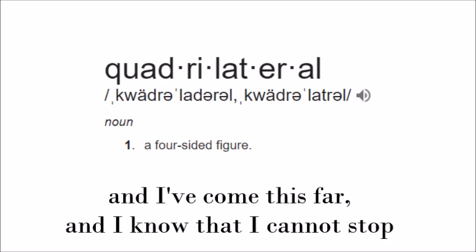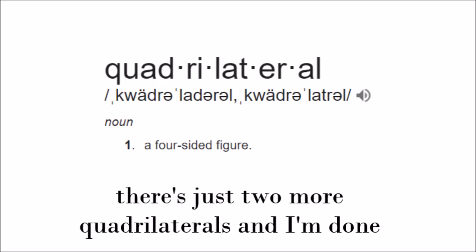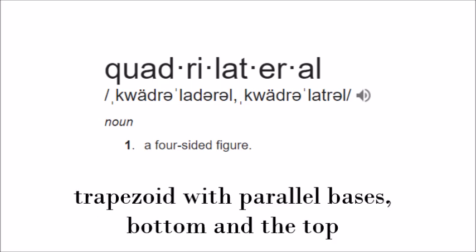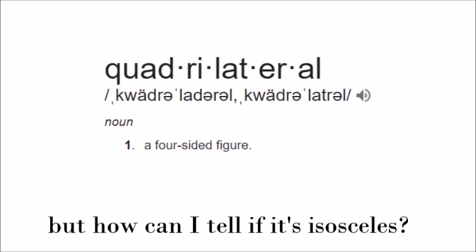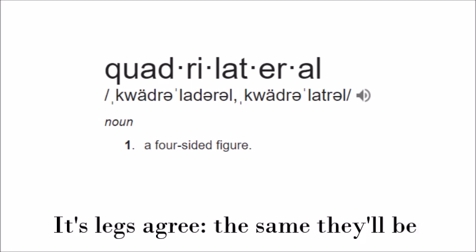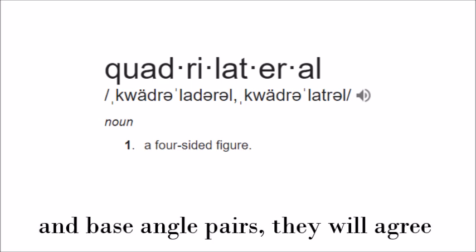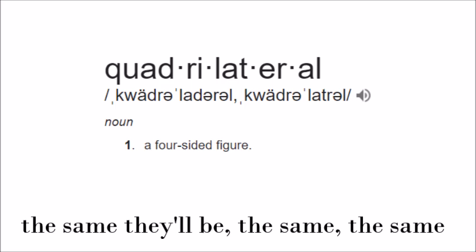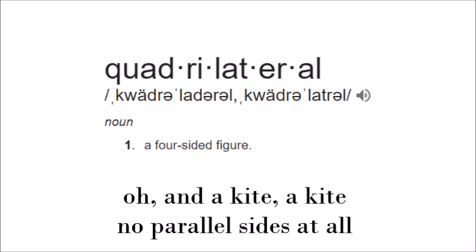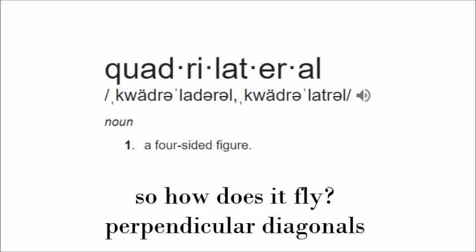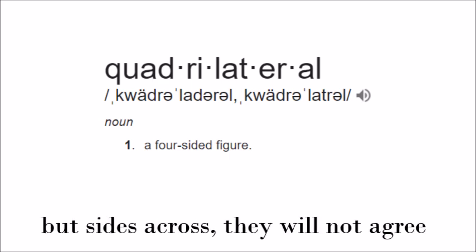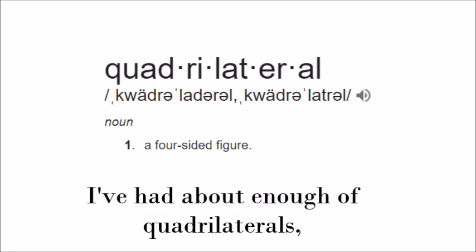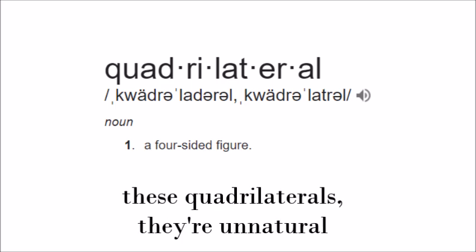And I've gone this far, and I know that I cannot stop. There's just two more — trapezoids and laterals. The parallel faces, bottom and the top, legs on the side — the legs will be congruent inside. The base angle pairs will agree — they will be the same. And a kite — no parallel sides at all. How does it work? Two pairs of sides the same, but the diagonals will not be equal. And I've had about enough of quadrilaterals — these quadrilaterals, they're unnatural.